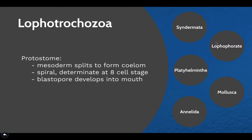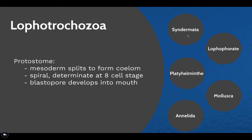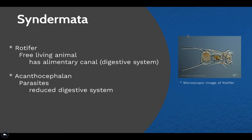Within the Lophotrochozoa clade, let's look at Syndermata first. There are two types: rotifers, which are free-living animals with a developed alimentary canal, and acanthocephalans, which are parasites. Acanthocephalans still have a digestive system, but it is more reduced and less developed compared to the rotifers.